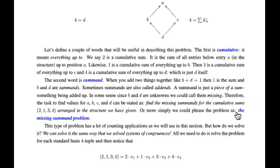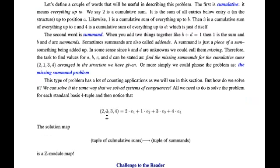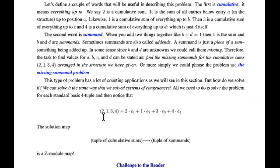We can think of the problem as the missing summand problem. This tuple represents the cumulative sums, and we can write it in terms of the standard basis ordered tuples E1, E2, E3, and E4 as follows: 2 times E1 plus 1 times E2 plus 3 times E3 plus 4 times E4. You can also think of these as (1,0,0,0), and so on — let's write that out.